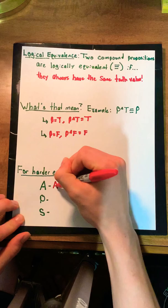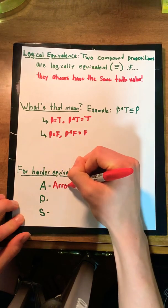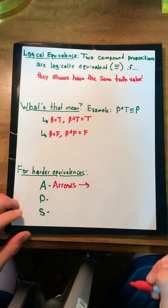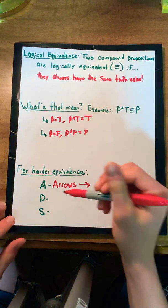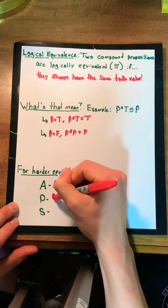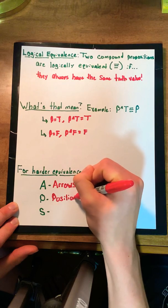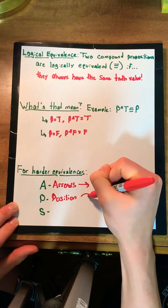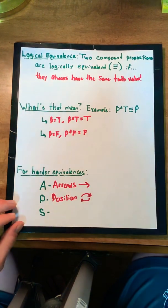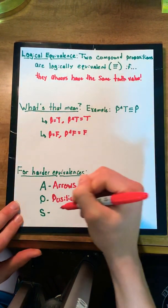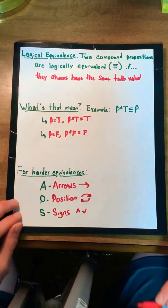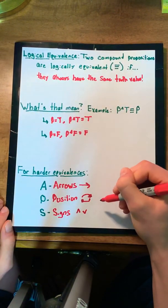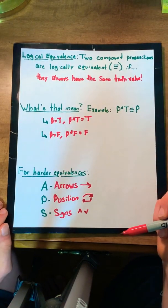The A stands for arrows. Typically if you see arrows in a problem you're gonna want to remove them so you can play around with the logical equivalence a little bit more. The P stands for position. We always want to make sure to get the variables into their correct position. And the S stands for signs. After we've gotten the arrows and positions correct, we're gonna make sure the signs are correct as well.